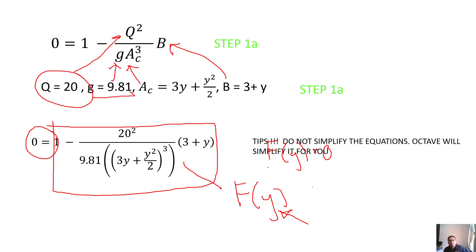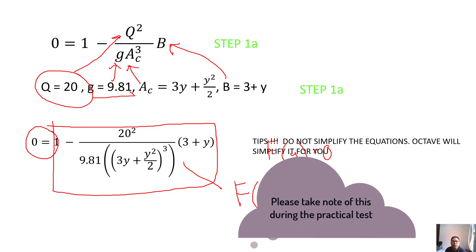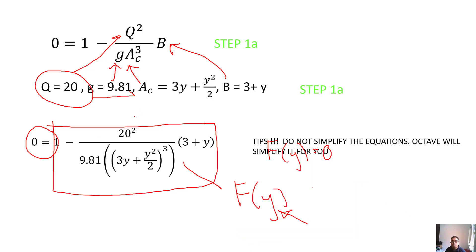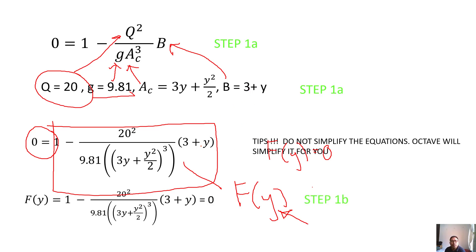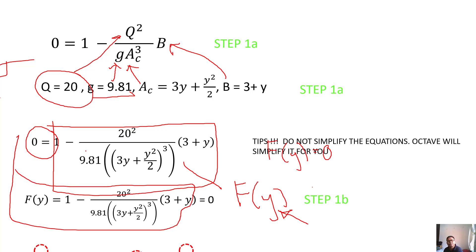One tip: when you substitute Q here, you don't have to calculate 20 squared yourself — just write it as-is and let Octave perform the calculation. I will not simplify the expression; I just substitute values directly. You don't have to simplify because we will ask Octave to perform it. So this is your f(y), and it must be equal to zero, with y as the unknown to find using bisection methods.